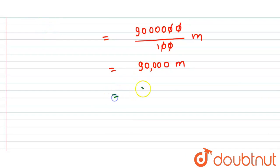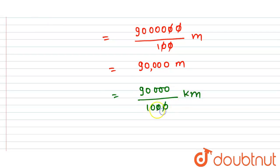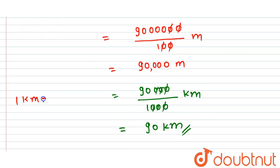Now, to convert meters into kilometers, we divide by 1000. So 90,000 divided by 1000 — the three zeros cancel — giving us a distance of 90 kilometers.